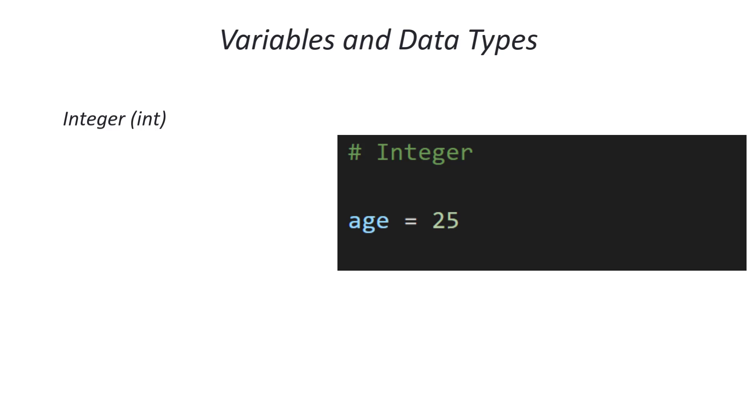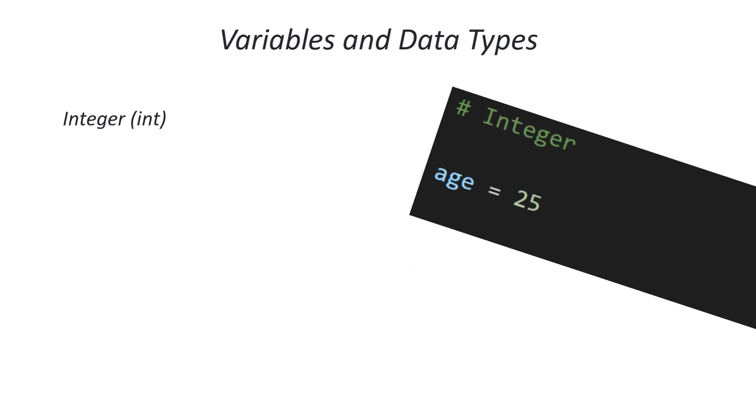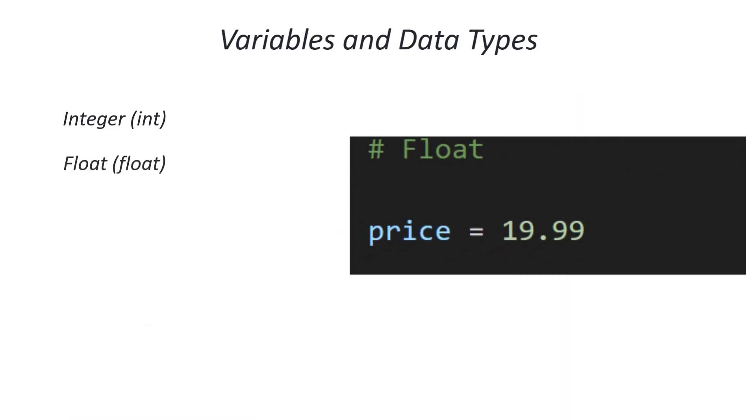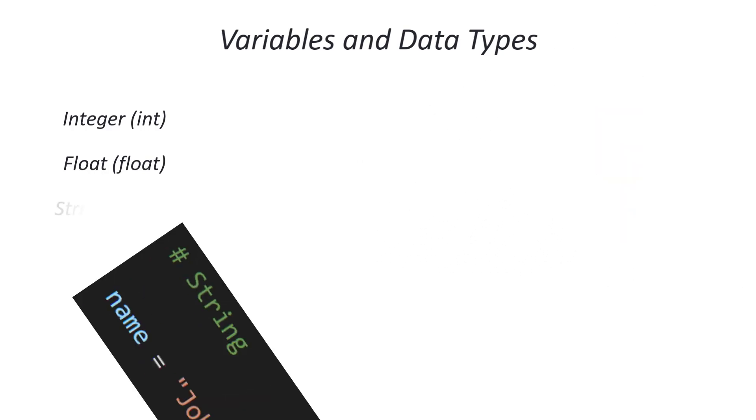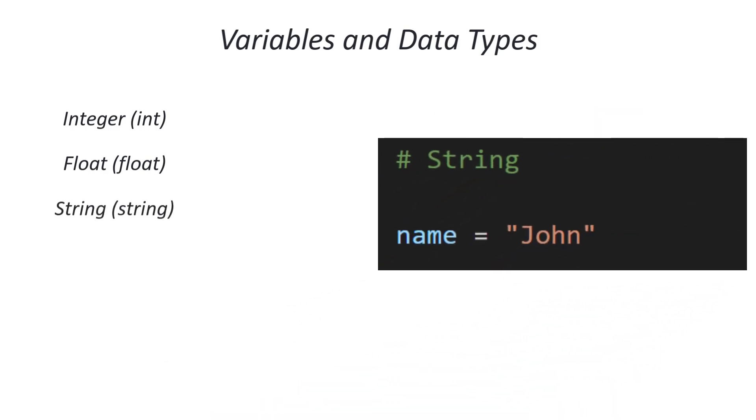Integers are used for whole numbers without decimal points, for example: age equals 25. Their use cases include counting, indexing, and representing quantities. Floats are used for numbers with decimal points, for example: price equals 19.99. Their use cases include calculations involving fractional values, representing measurements, and other similar scenarios. Strings are used for text data enclosed in quotation marks, for example: name equals John.